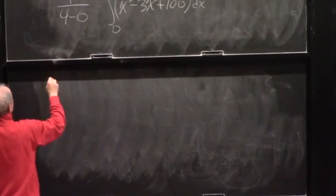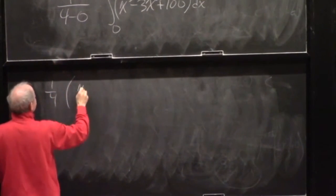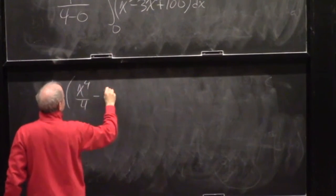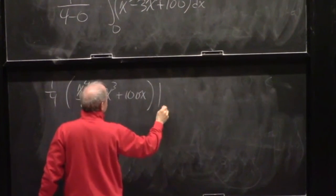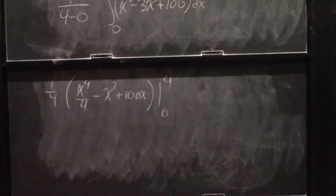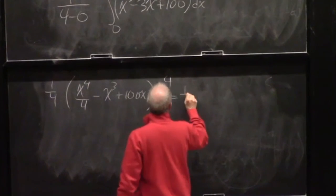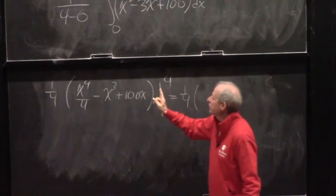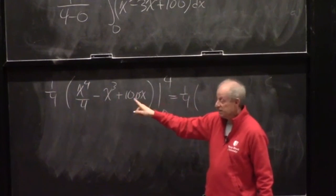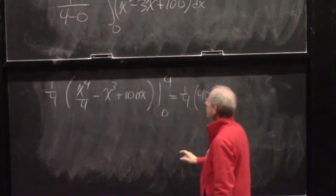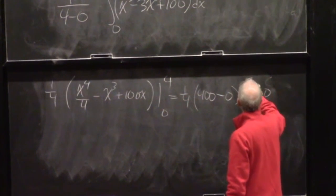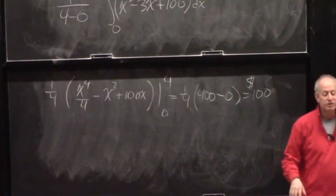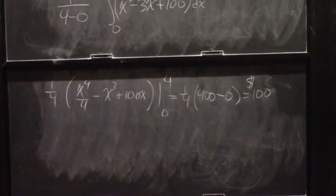That is one-fourth of 400, which equals 100. So the average revenue is 100 — whether that's 100 dollars, 100 thousand, or 100 million depends on the units. In business contexts you can use moving averages or time series analysis to predict future values from past data.